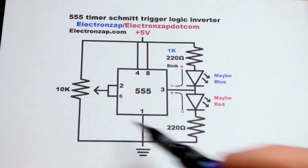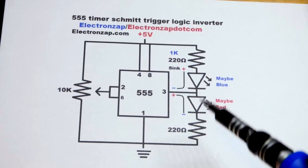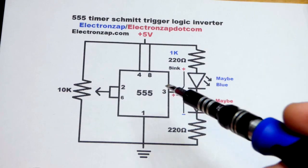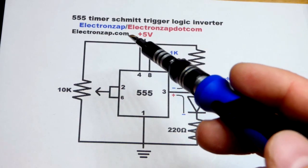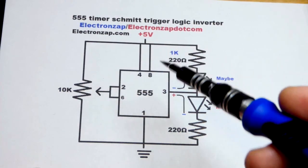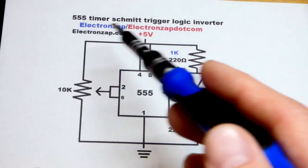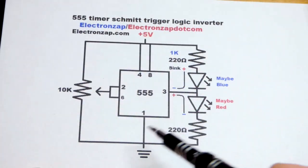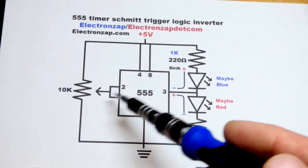So now in this video we're going to come back to the circuit we looked at in the last video. I meant to take these voltage measurements in the last video but I forgot, so I'll just do a quick video on it now. So it's a 555 timer Schmitt trigger logic inverter. We got a couple pins looking at the voltage of the trim pot.